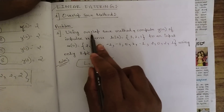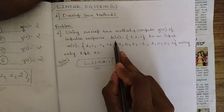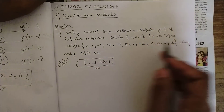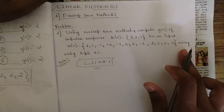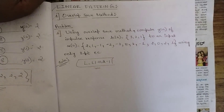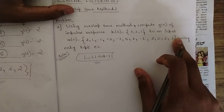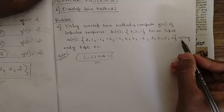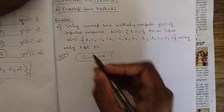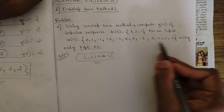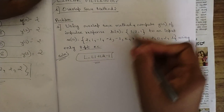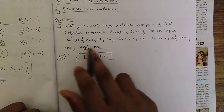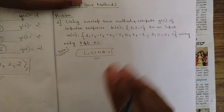Let us now discuss one problem: using the overlap save method, compute y(n) given impulse response h(n) = {3, 2, 1} and a long input sequence x(n). Don't be intimidated by the long sequence — it won't be directly used as-is. I am going to tell you how this problem is solved using only eight-point circular convolution. They have mentioned eight-point circular convolution, but the input sequence length is more than eight and h(n) has only three values.